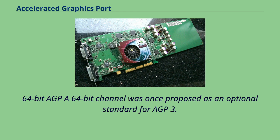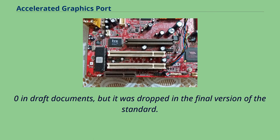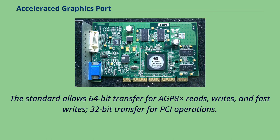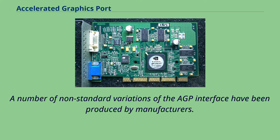A 64-bit channel was once proposed as an optional standard for AGP 3.0 in draft documents, but it was dropped in the final version of the standard. The standard allows 64-bit transfer for AGP 8x reads, writes, and fast writes, and 32-bit transfer for PCI operations. A number of non-standard variations of the AGP interface have been produced by manufacturers.